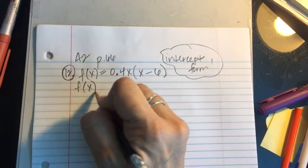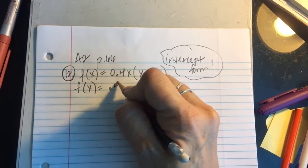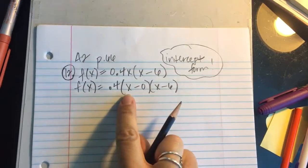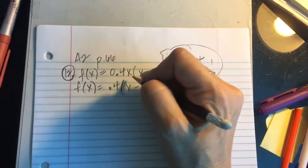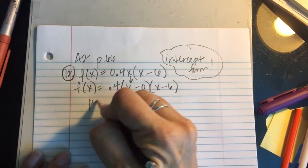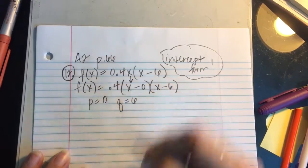f(x), watch what I do here, 0.4. Notice how I just took this x that was by itself, and I'm actually going to pull a p value of 0 and a q value of 6.